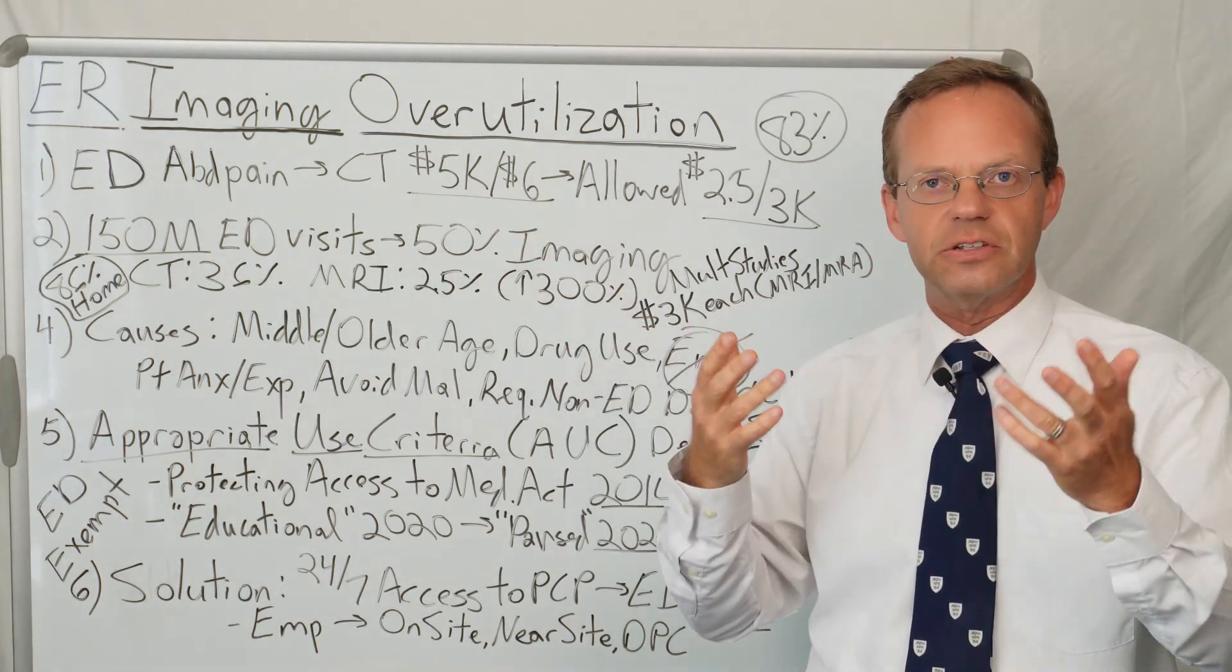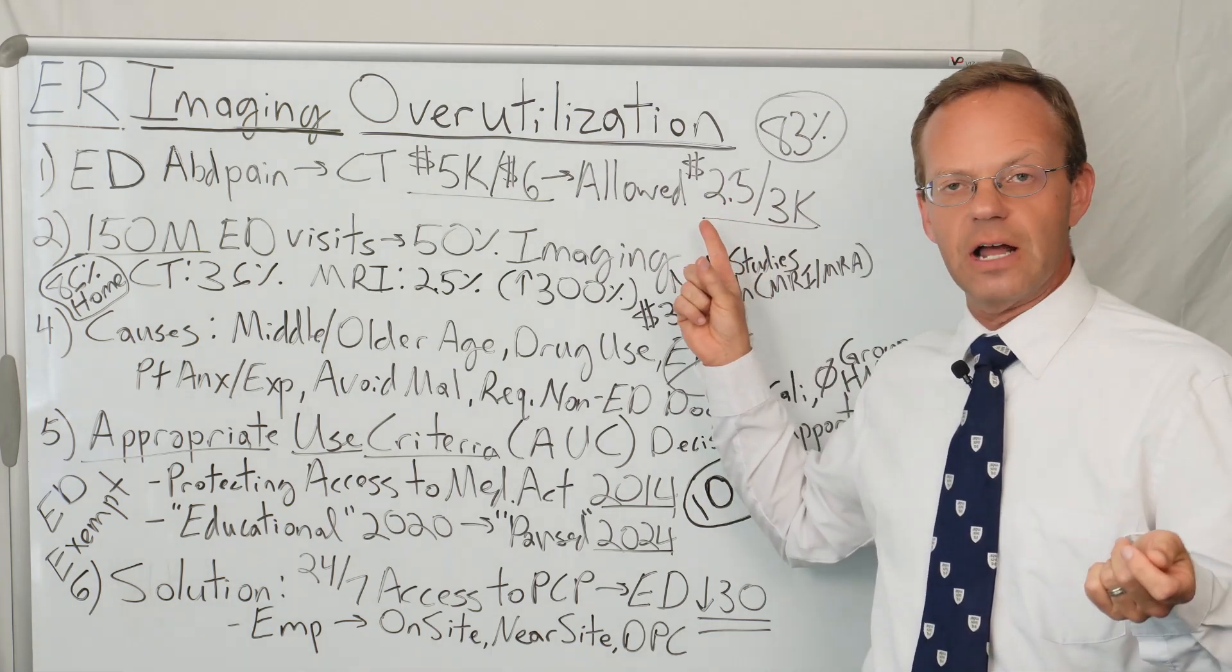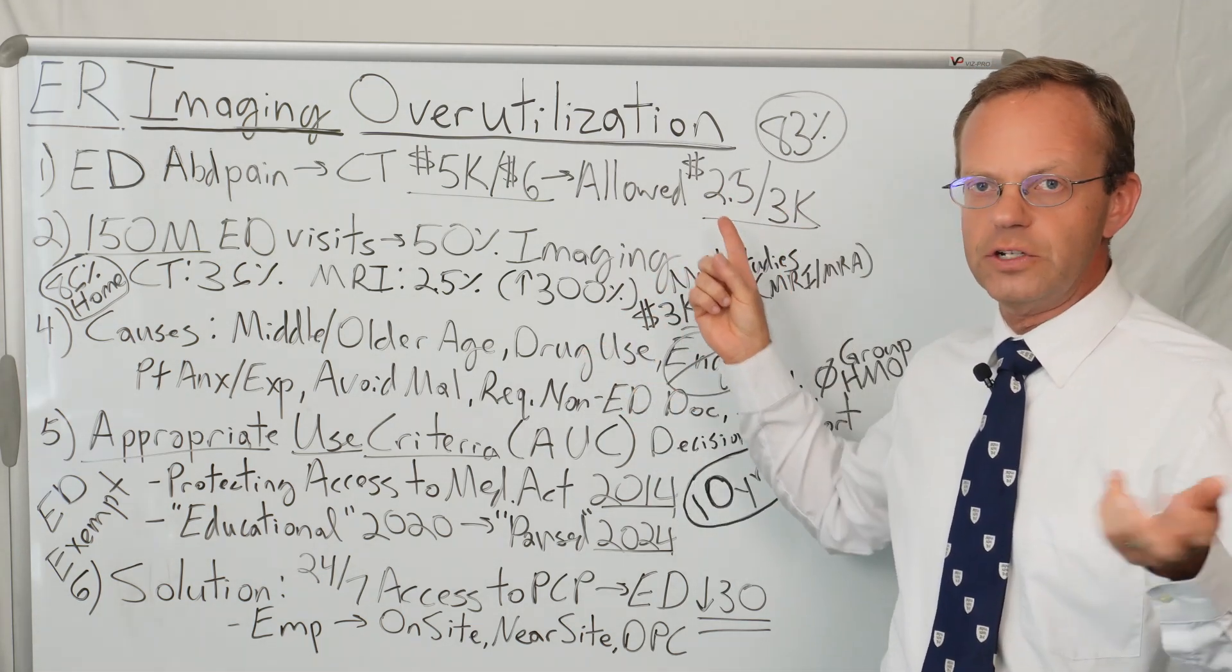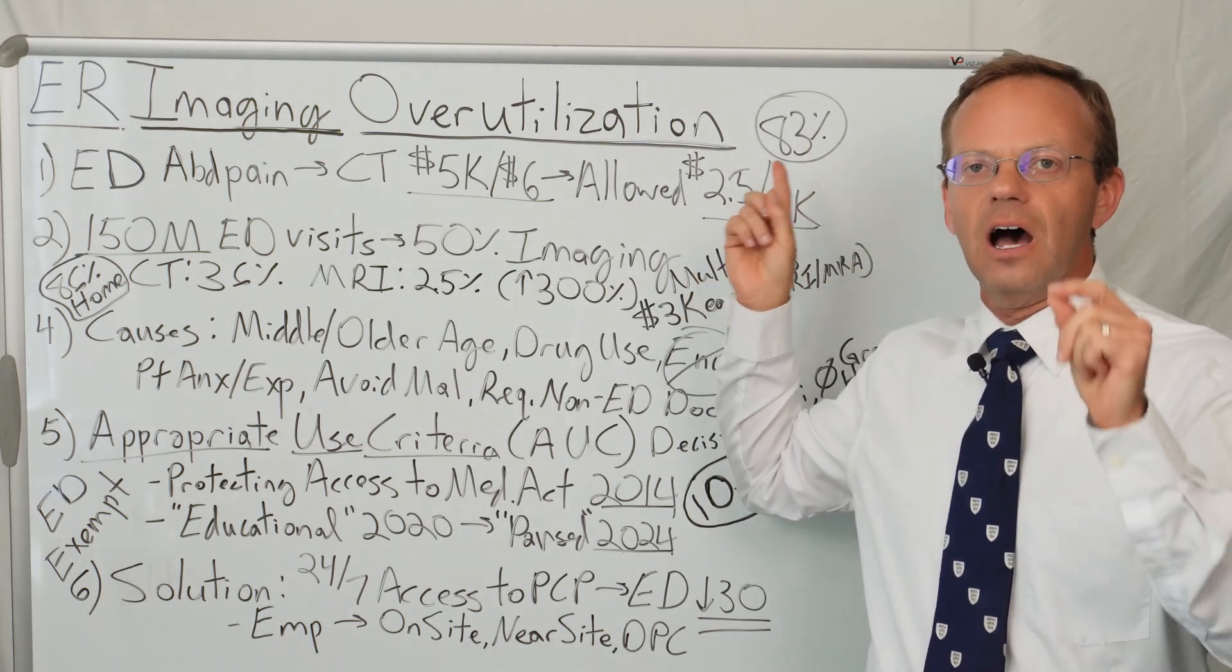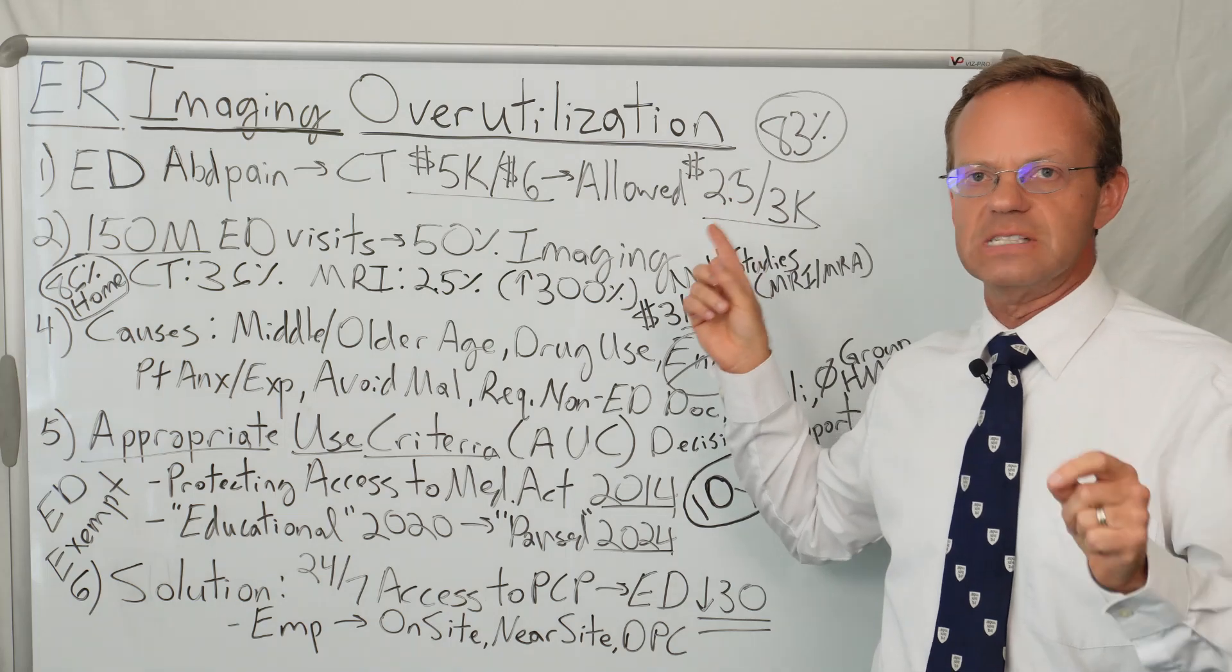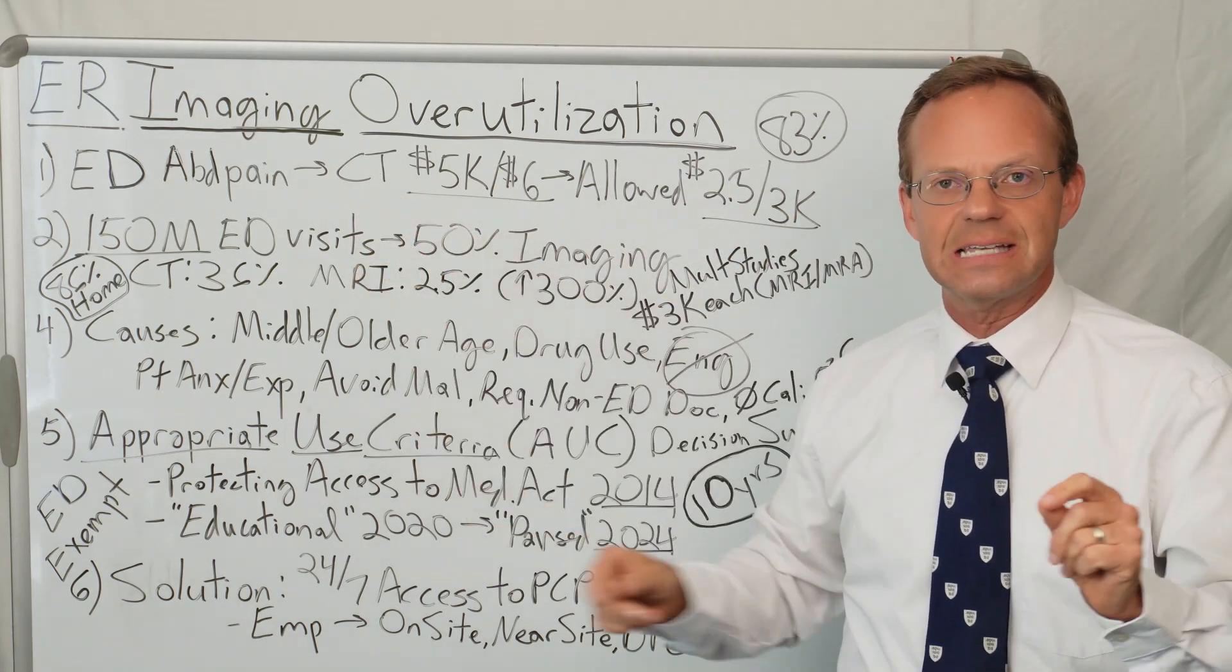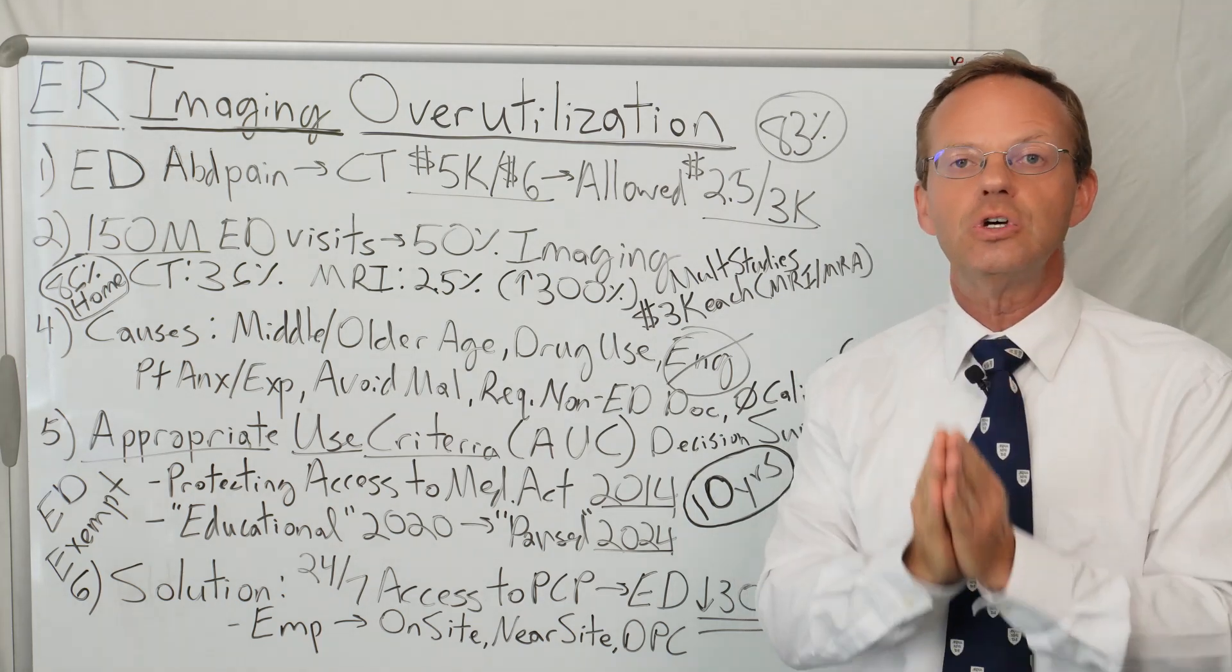After the insurance discount, the allowed amount for that ER visit was $2,500 for the CT scan and the total ER visit was $3,000. So if you do $2,500 divided by $3,000, that means 83% of the cost of that ER visit was just in the imaging, was just in the CT scan. Imaging in the emergency department is a huge deal.